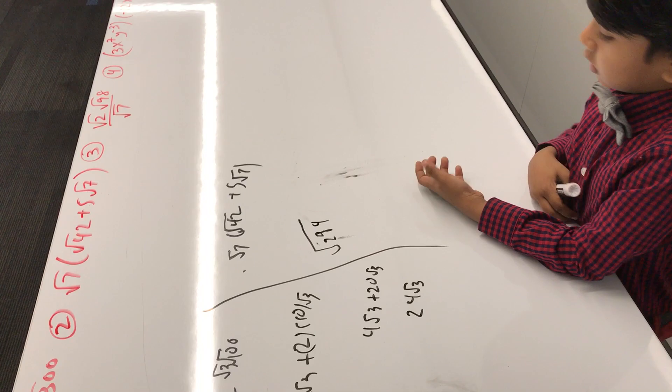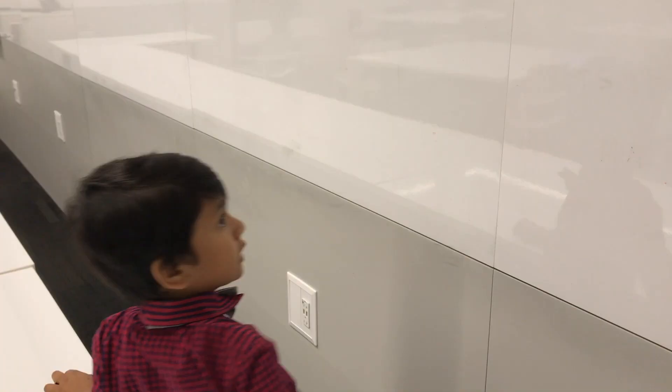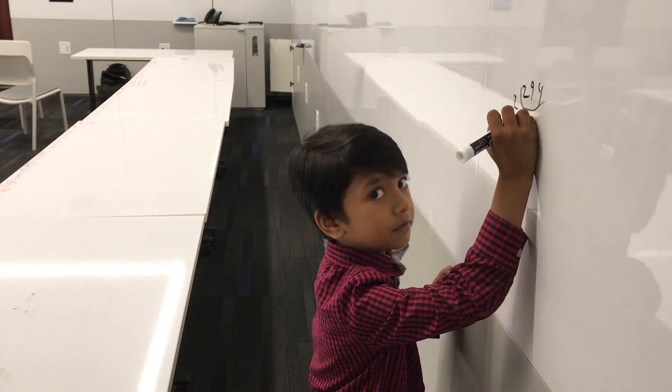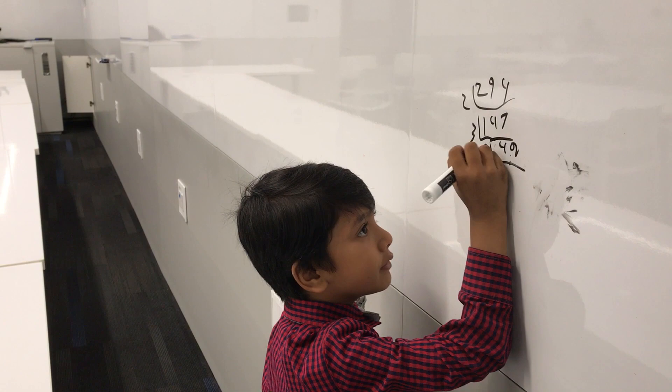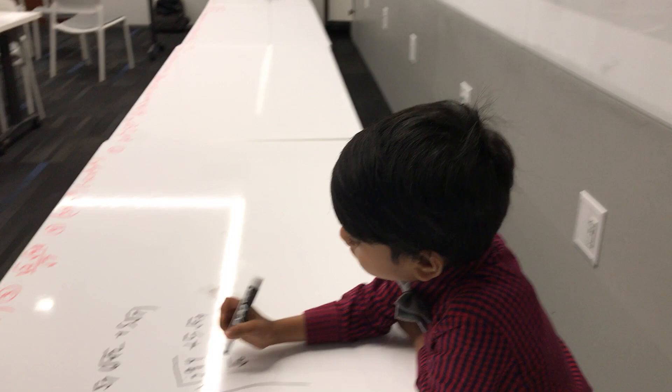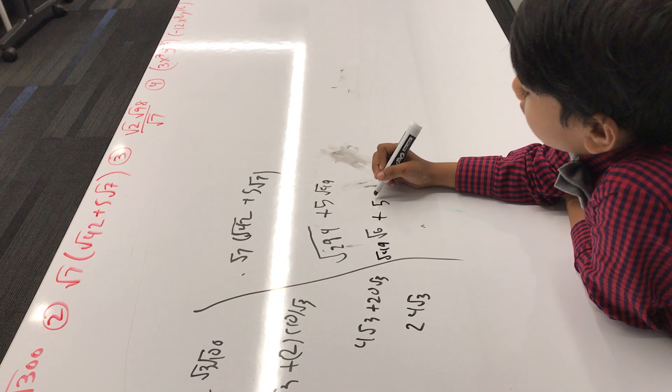Here's the division of 294. Always start with the smallest number — that's the lesson. 2, 1, 47. So 49, 7, 7. So 6√49, 5 times 7 which is 35. So 7√6 plus 35.